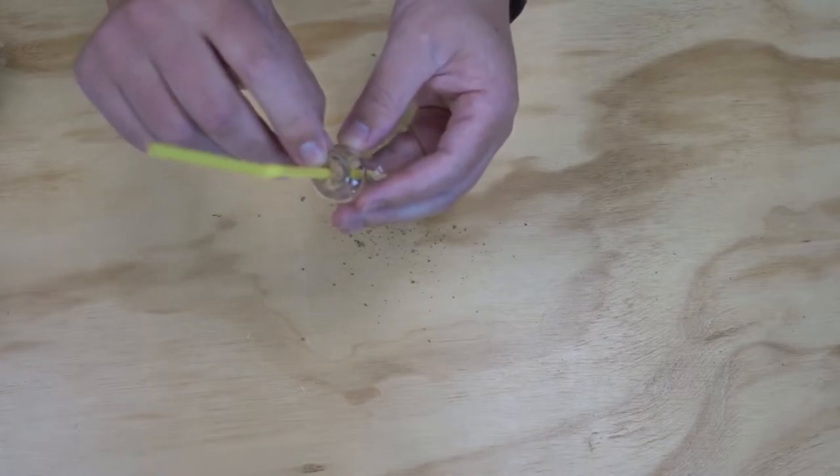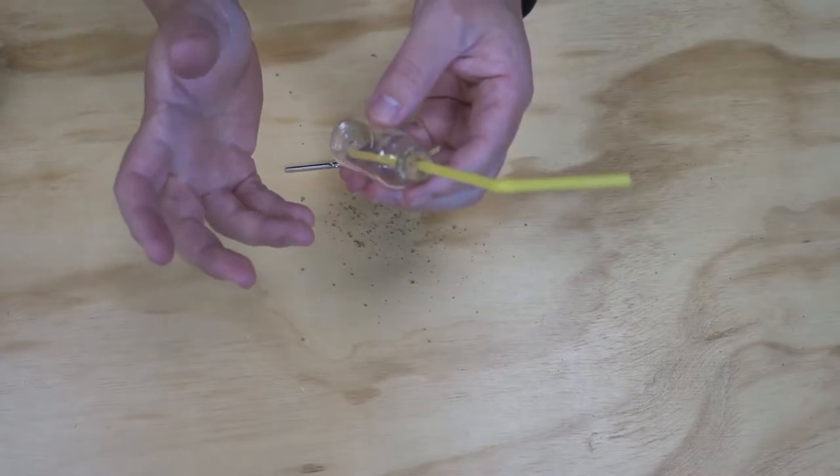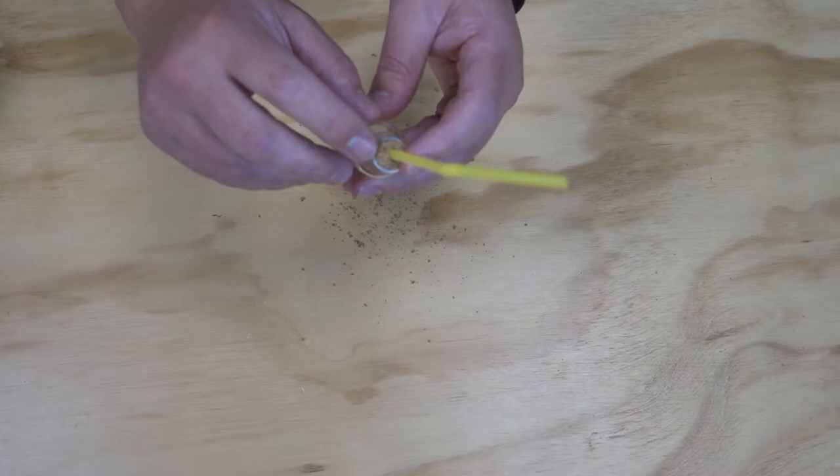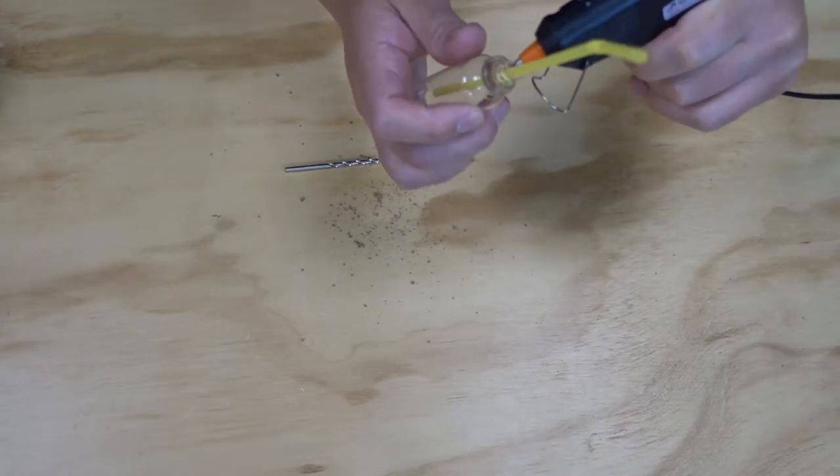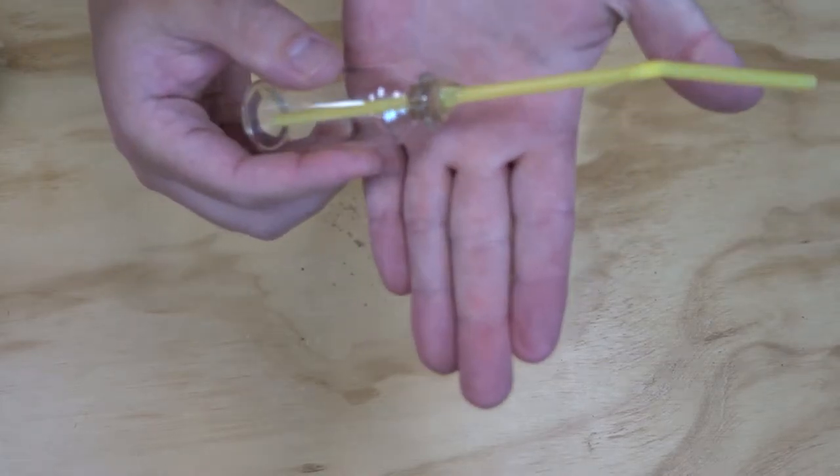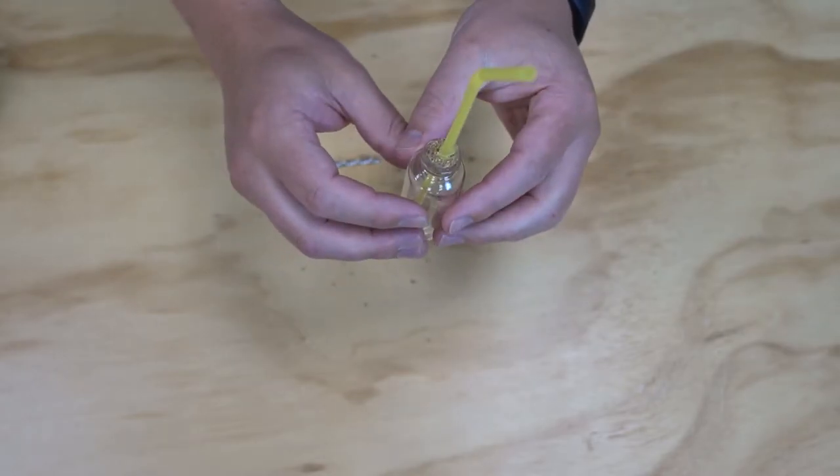Next I'm going to make sure that this is completely airtight by putting a little bit of hot glue around the top. If any air can escape here, things aren't going to work, so we need to make sure that this is completely airtight. Now I'm going to put that aside to dry and set so it's completely airtight and move on to my next step.